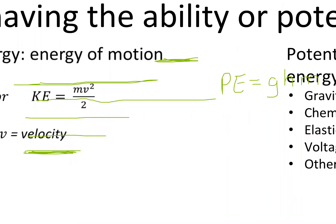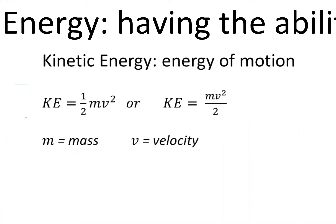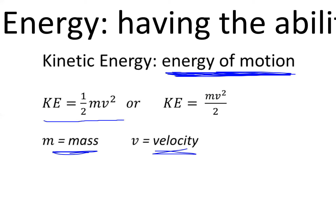What we're really going to focus on is not potential energy but kinetic energy — the energy of motion. The energy of motion is energy that anything has when it's moving. Everything around us is moving because even at the molecular level, atoms and molecules are vibrating. We can calculate kinetic energy: the formula is one-half mass times velocity squared, or equivalently mass times velocity squared divided by two.